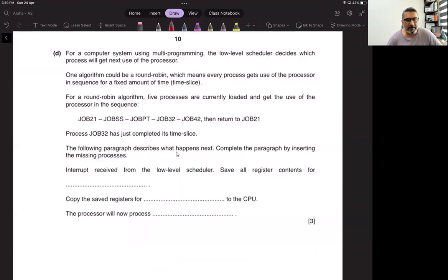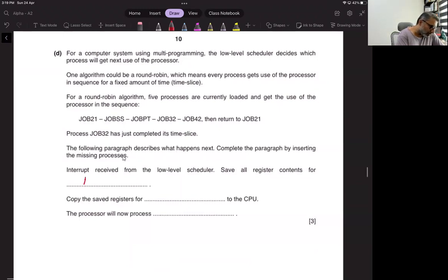The following paragraph describes what happens next. Complete the paragraph by inserting the missing processes. Interrupt received from the low level scheduler, save all the registers content for job 32. Copy the saved registers for job 42 to the CPU. The processor will now process job 42.